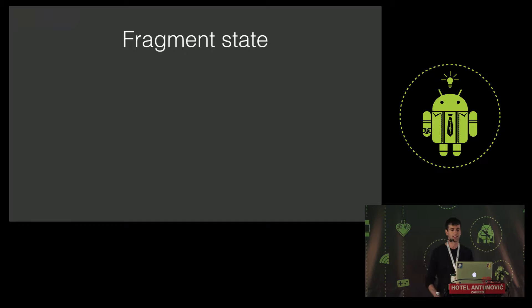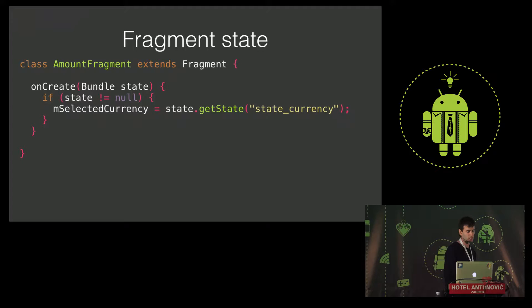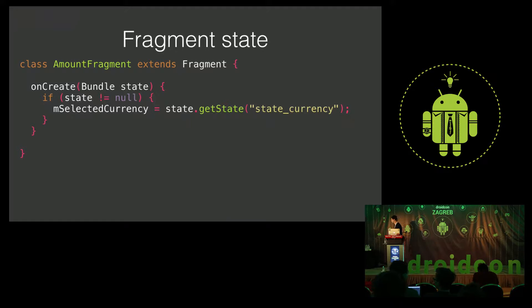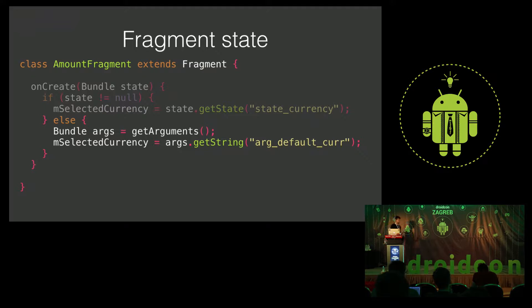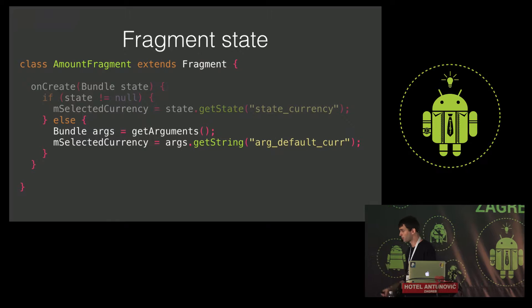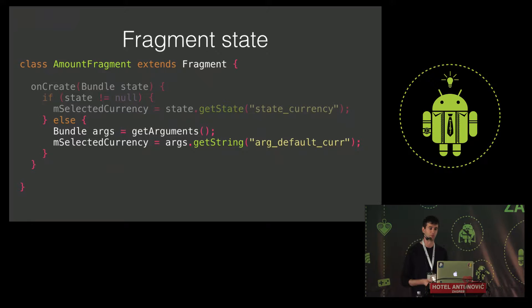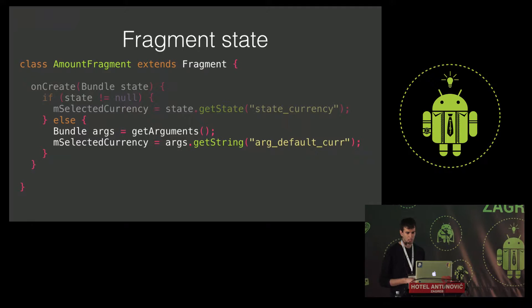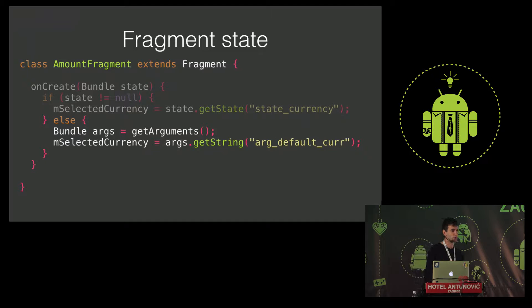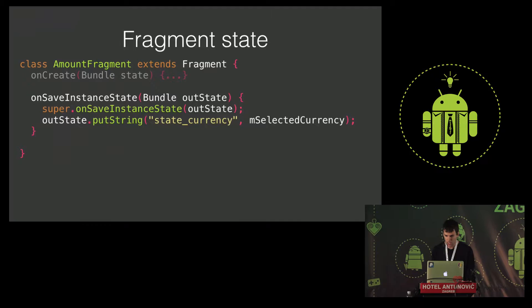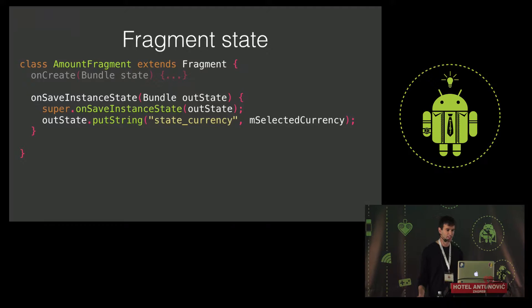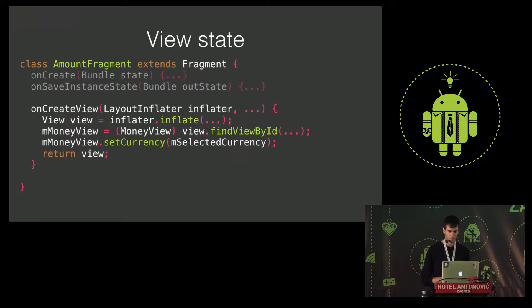One mechanism Android gives us to store state is the bundle. Here's a simple example of restoring the selected currency from the bundle's STATE_CURRENCY field. The amount fragment can also receive the default currency as an argument — for a US PayPal account the default would be US dollar; for a German account, Euro. Both initializing and restoring fragment state should be done in onCreate. The counterpart is onSaveInstanceState, where I simply store the selected currency in the bundle.